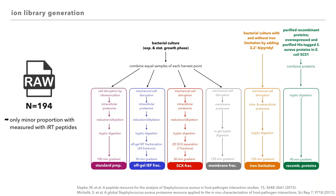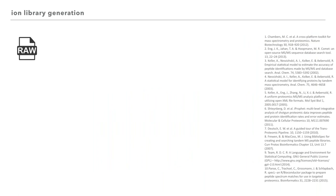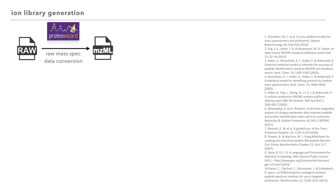To get a high-quality ion library, it is recommended to use retention time spike-in markers like the iRT. Most of the measurements were unfortunately performed without the iRT spike-in — essentially pre-iRT era measurements. I will explain how we dealt with that problem and how we generated the ion library.